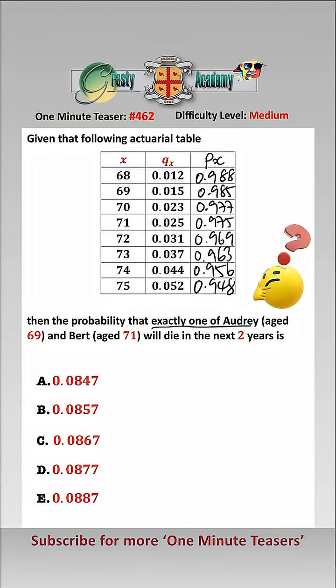So basically, the probability that exactly one of them dies in the next two years. We have either Audrey survives and Bob doesn't, which is 2P69 times Q71 add P71, Q72, a.k.a. 2Q71.